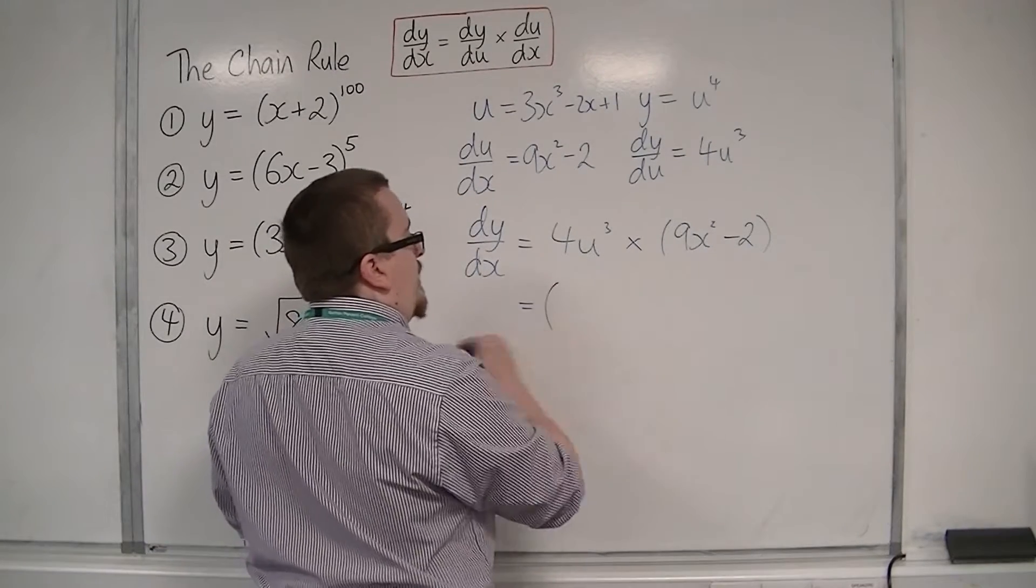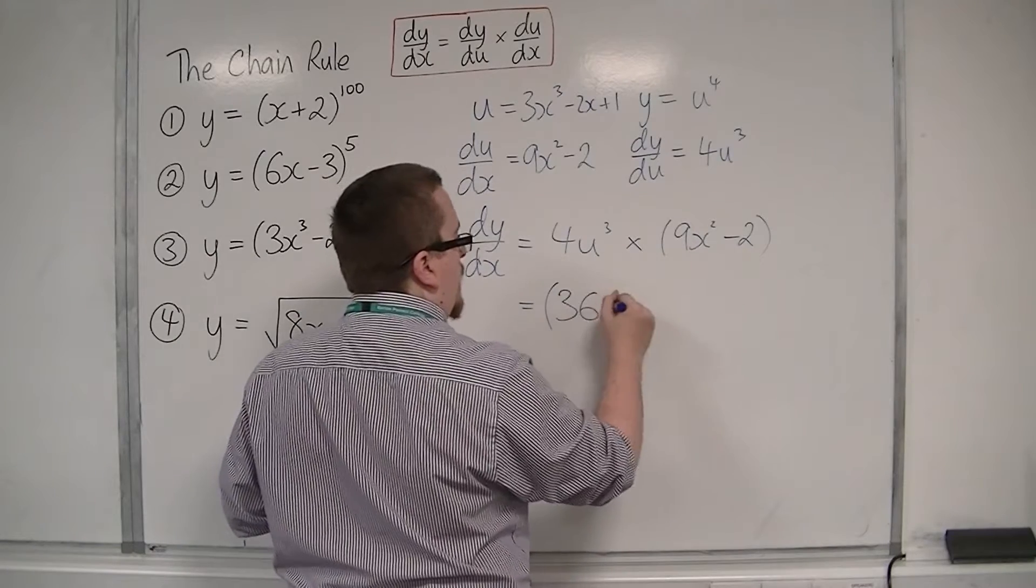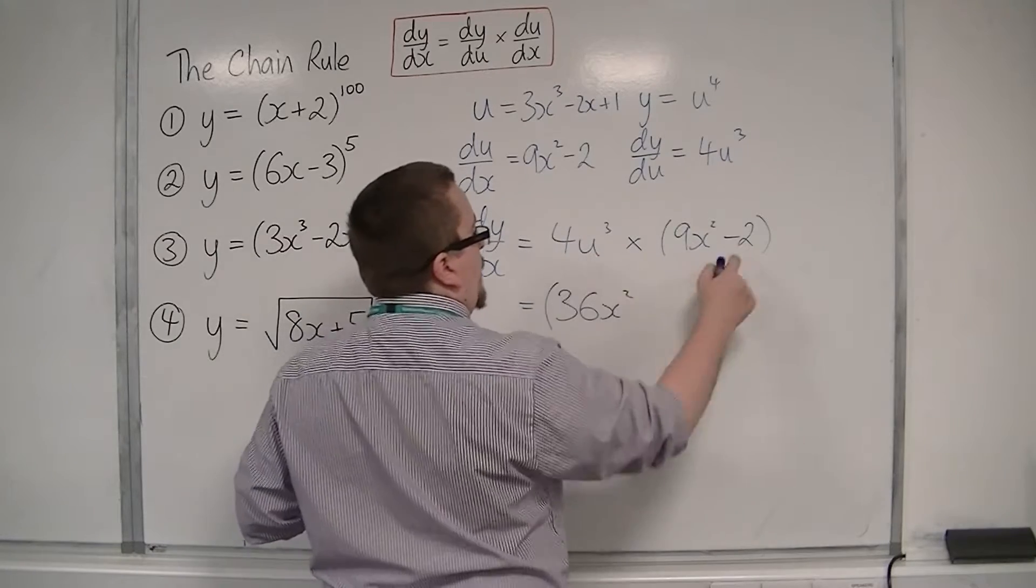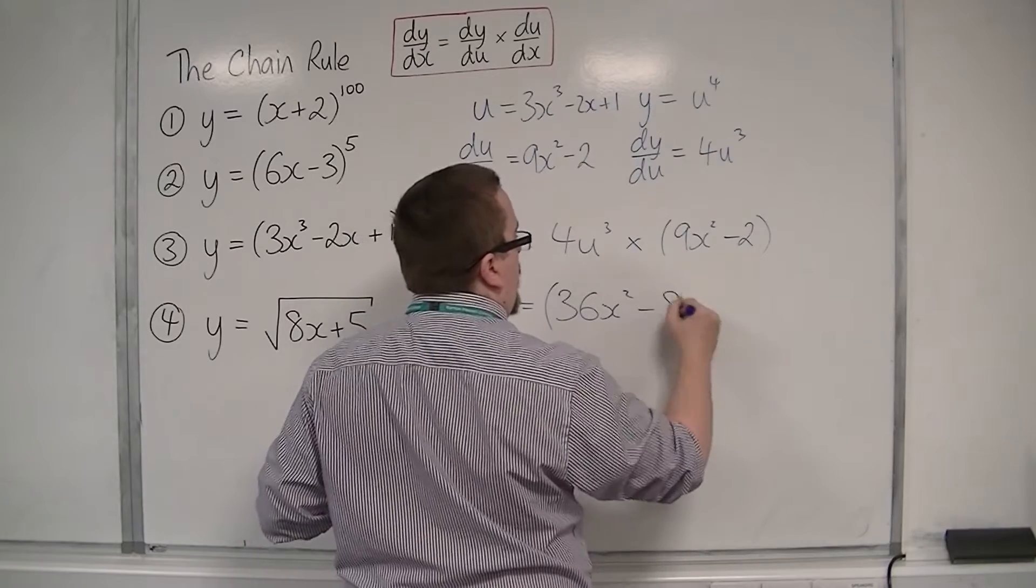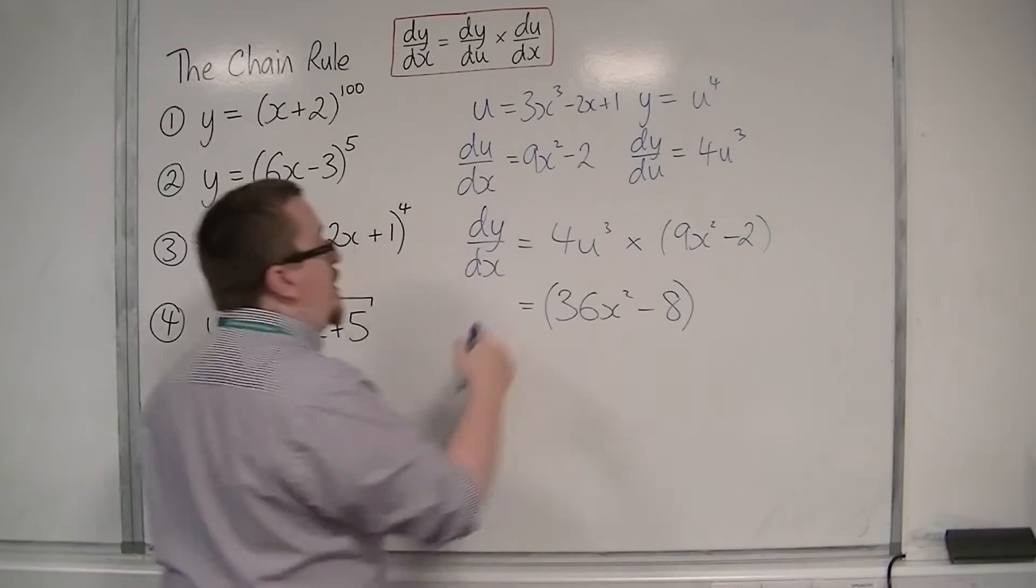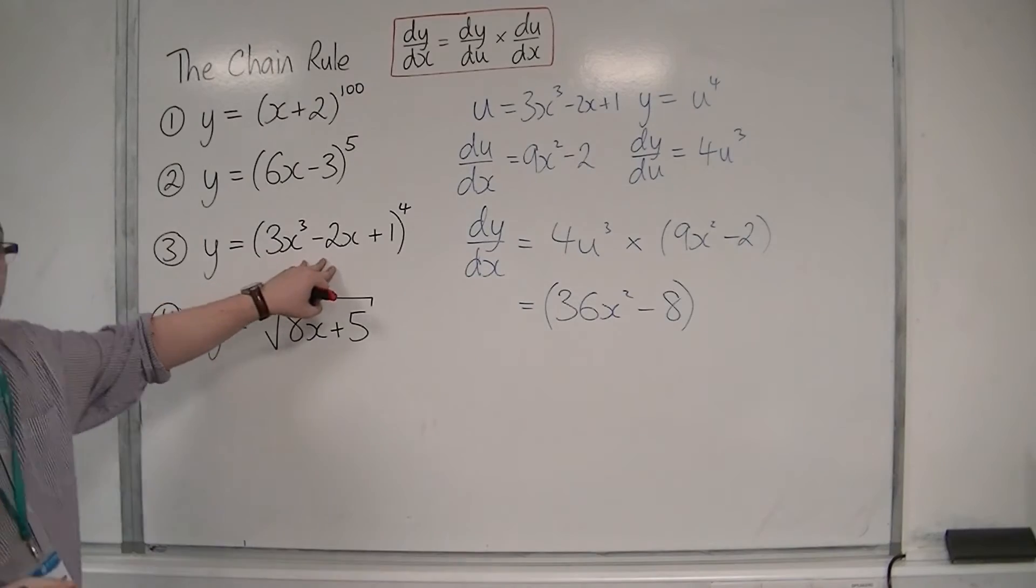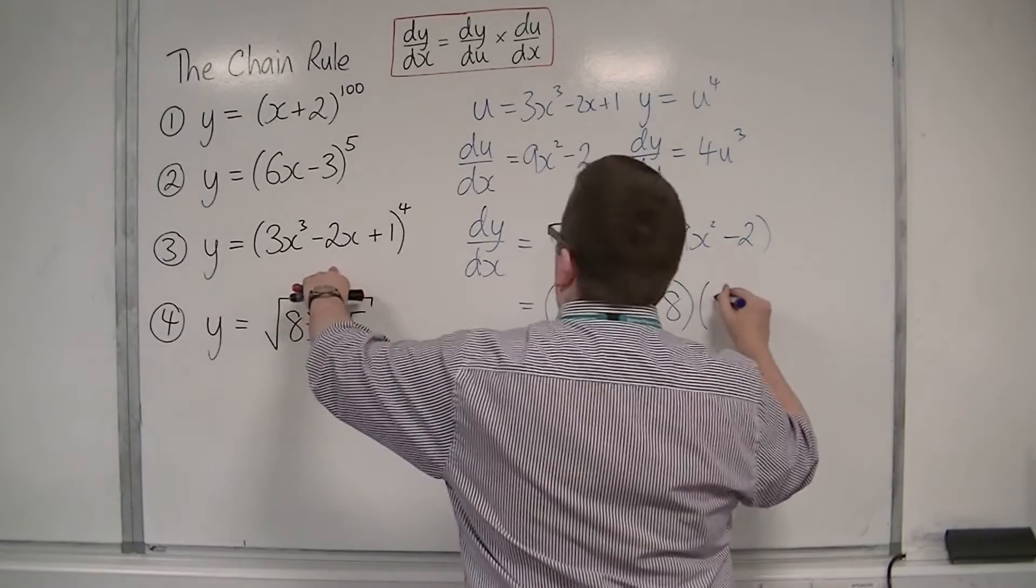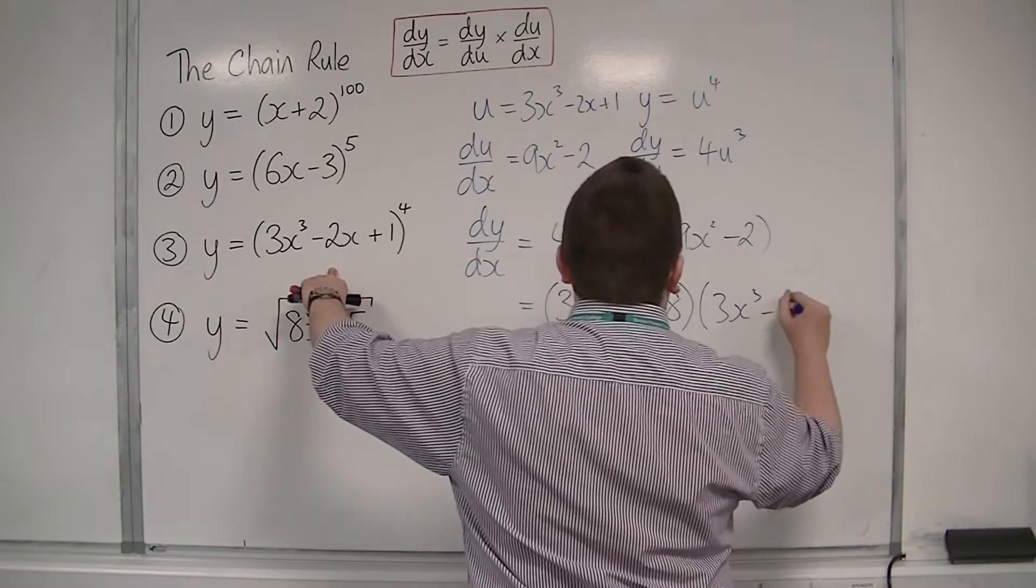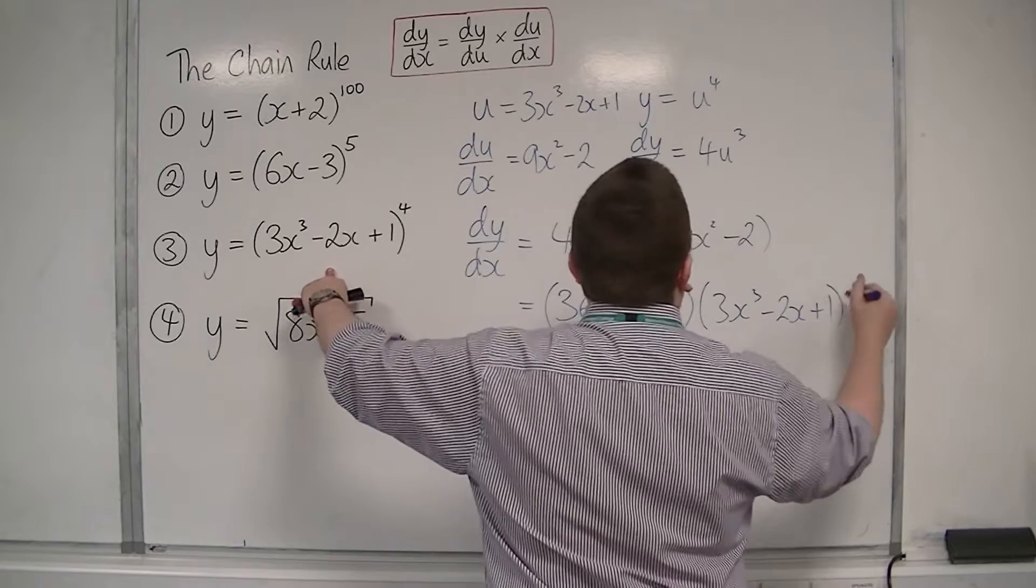I'm going to have 4 lots of 9 is 36 x squared. 4 lots of 2 is 8, so minus 8. And then I've got u to the power of 3. Now u is this, so (3x cubed minus 2x plus 1), and it's now cubed.